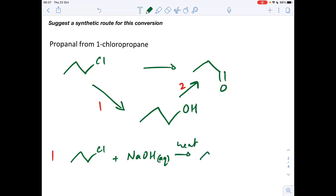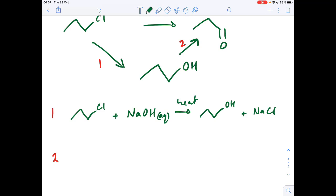And that would generate the alcohol and it would also make sodium chloride. So once we've made the alcohol, we need to oxidise it. But we don't want it to go all the way to the carboxylic acid.